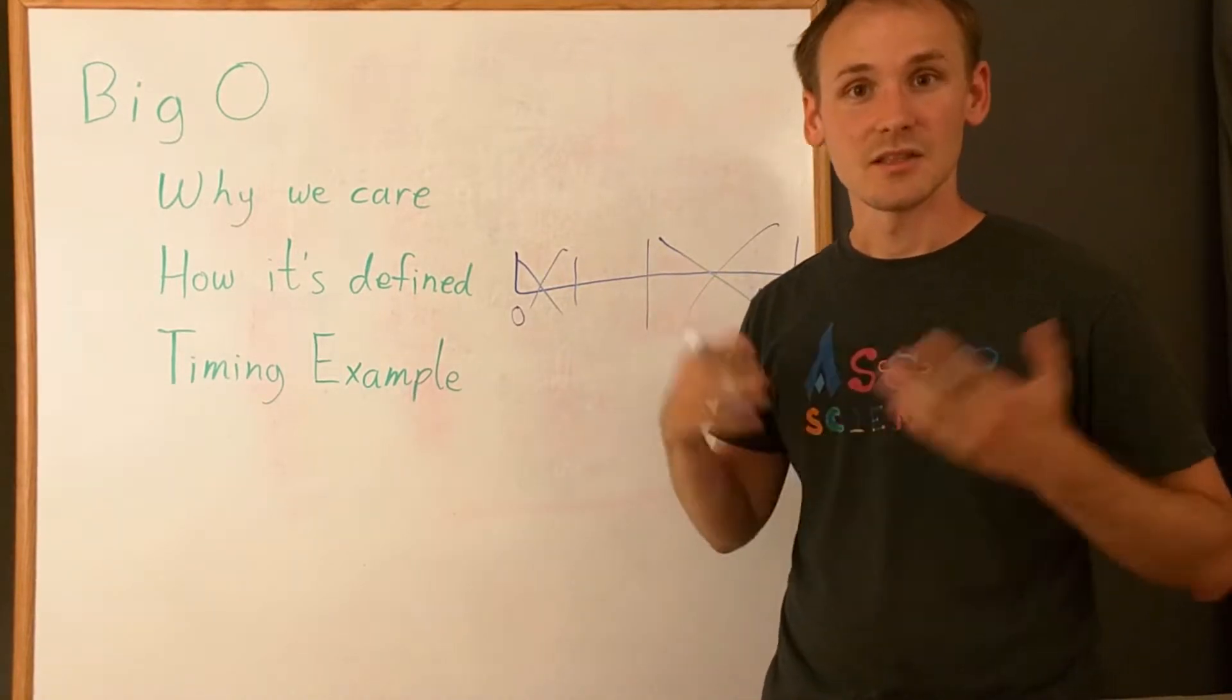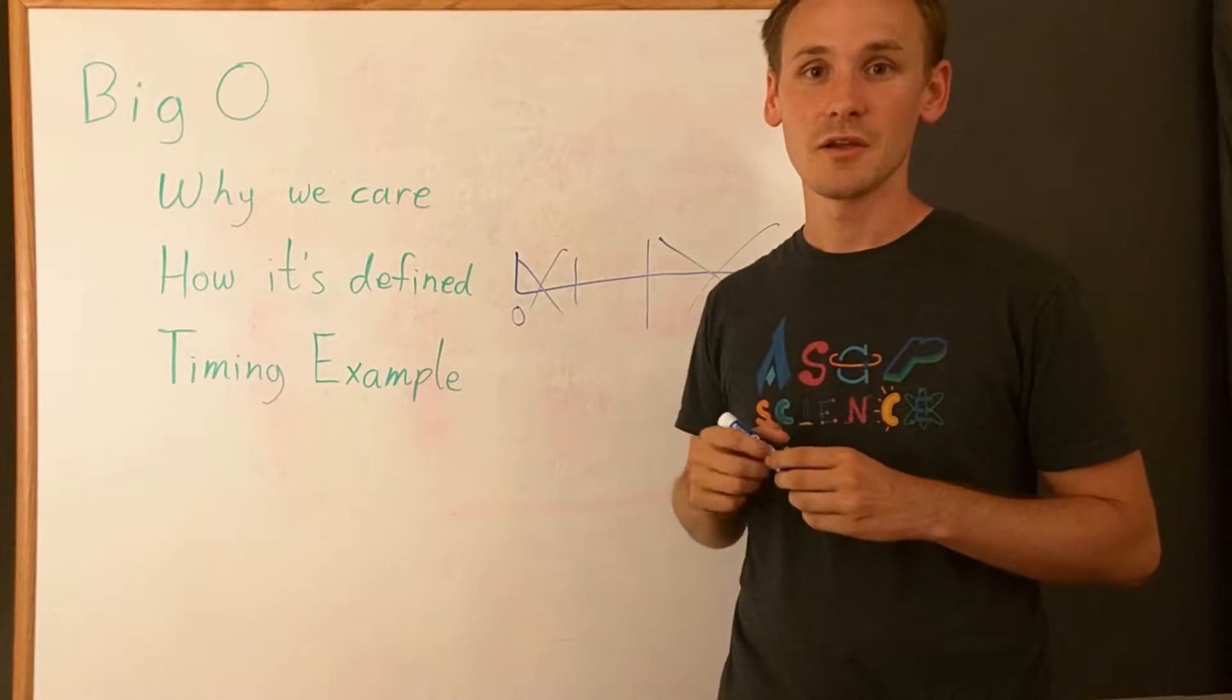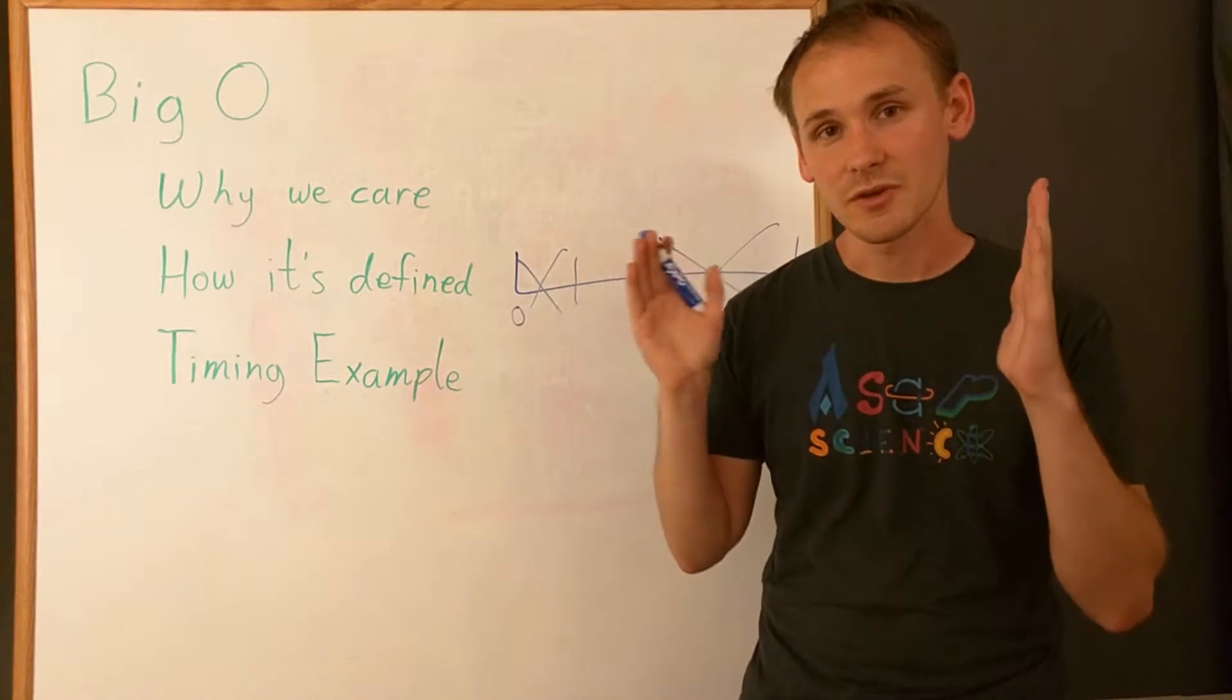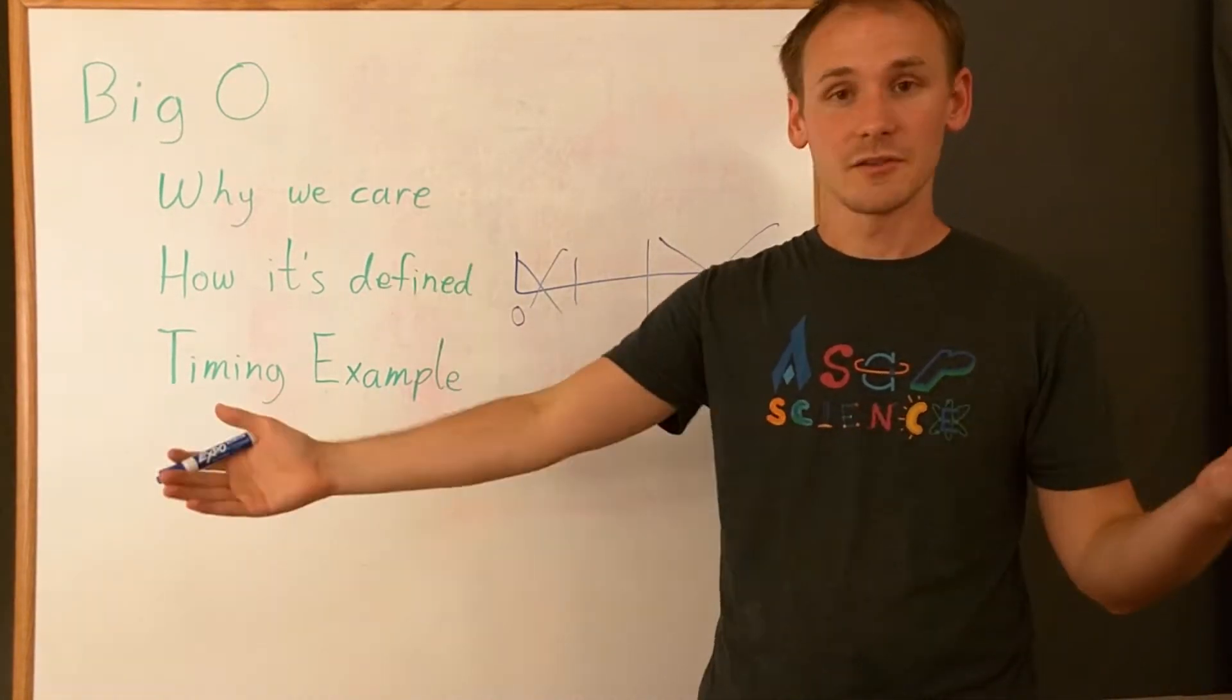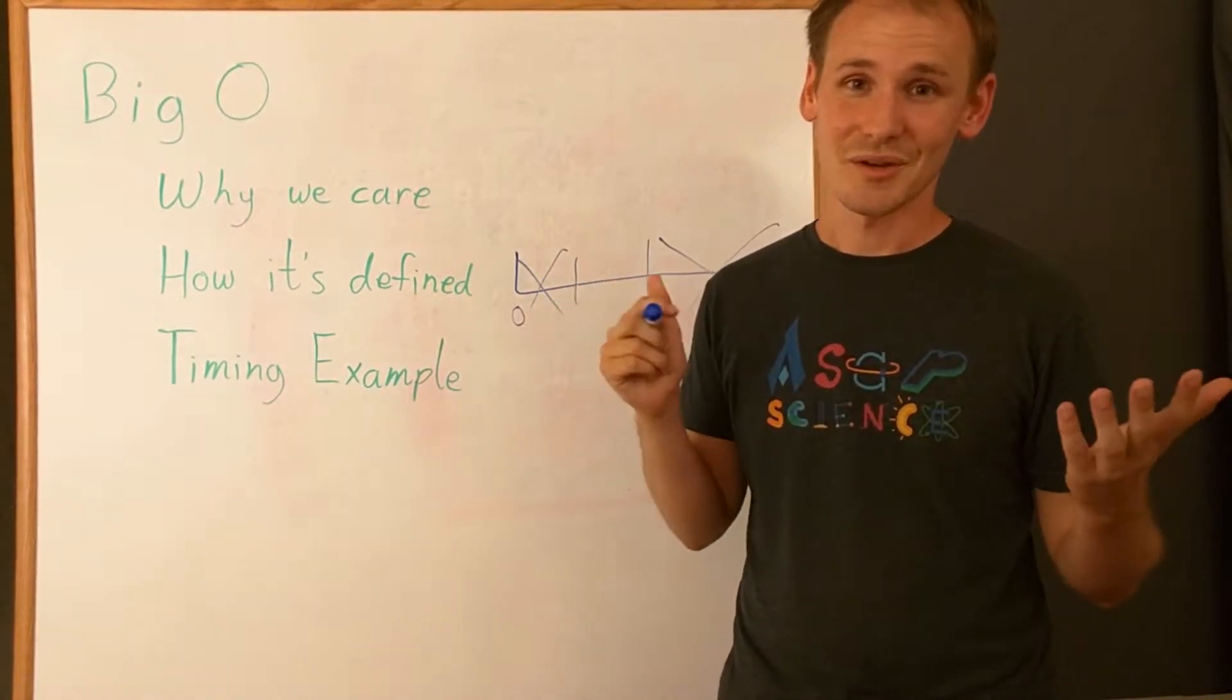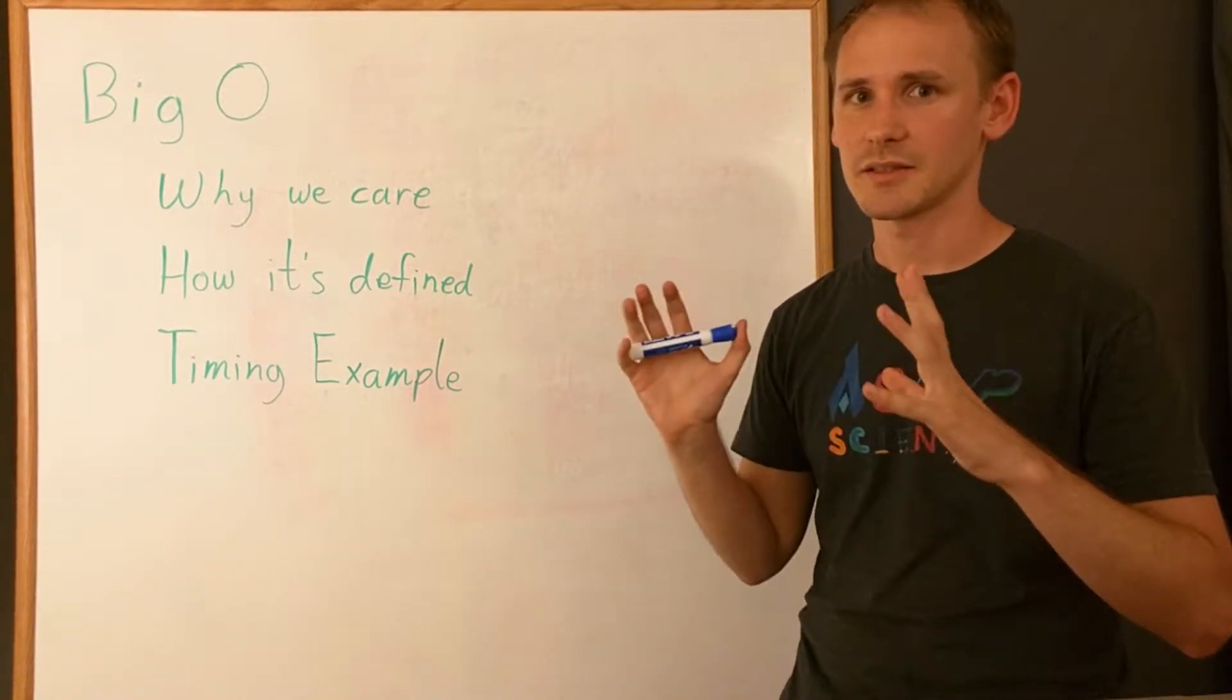In this case, as the number of words doubles, we only add one extra step. And as you can imagine, for a large company that's processing a lot of data, even if they're able to process, say, a million words very, very quickly, if doubling the number of words meant that it would take twice as long, that just wouldn't be very good. So now let's move on to how big O is actually defined mathematically.